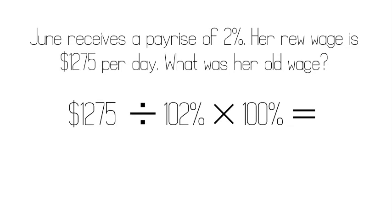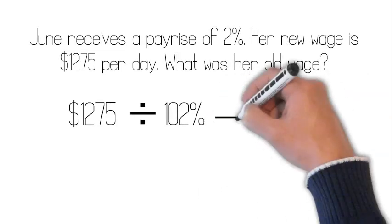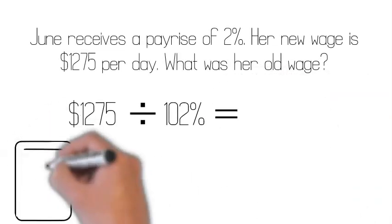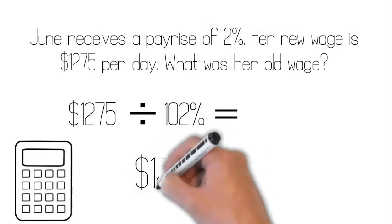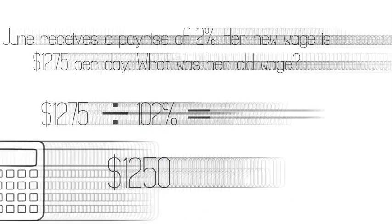Remember, we don't need the 100%. Let's use our calculator. So June's old wage was $1,250.